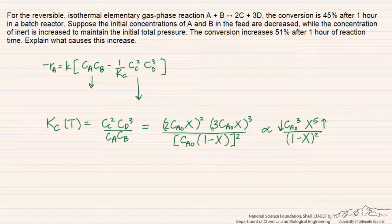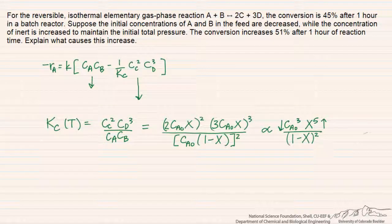So x must compensate by increasing. That means we get to a higher equilibrium conversion when we operate at a lower initial concentration of reactants. This is another way of saying that the rate of the reverse reaction has gone down more relative to the rate of the forward reaction, which allows us to achieve a higher equilibrium conversion.